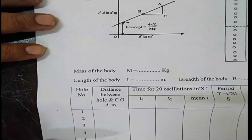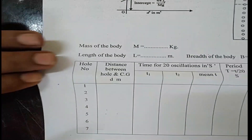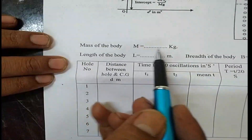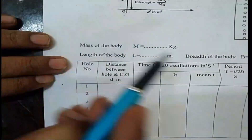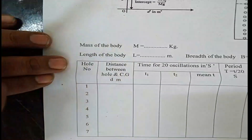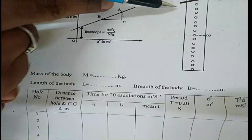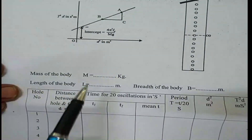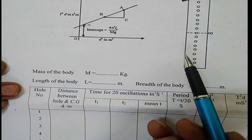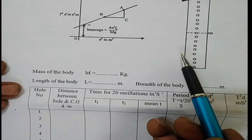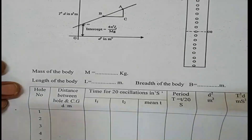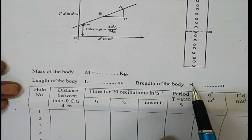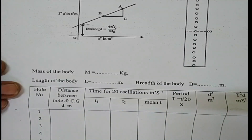For observations, first measure the mass m of the body using the physical balance and write down the value in kg. Then, using a meter scale, find out the length of the entire bar pendulum. Also measure the breadth B of the body using a vernier caliper or ordinary scale. Using these values of mass, length, and breadth, you can calculate the moment of inertia through the center of gravity using the first formula.